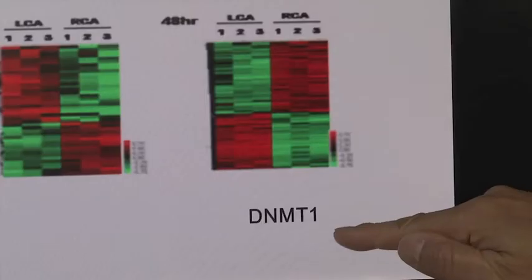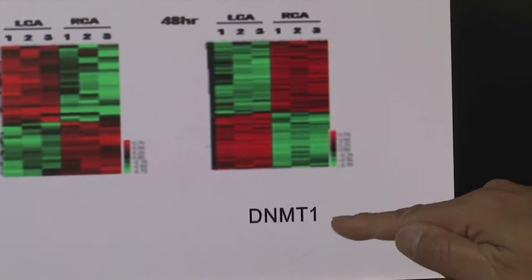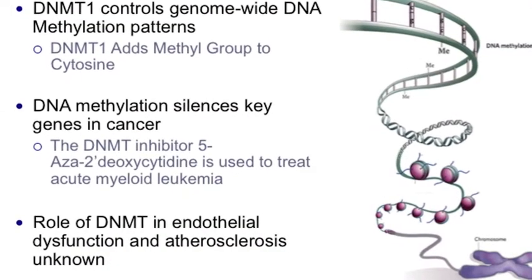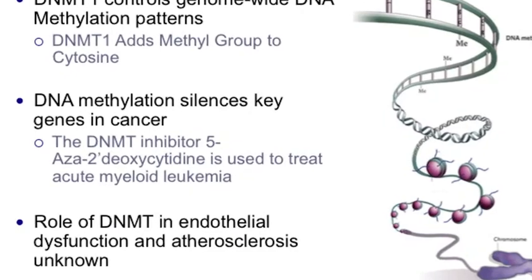With this model, we developed an additional novel technique that allowed us to collect endothelial-enriched genes directly from our animal models. Of the hundreds of genes identified, we noticed DNMT1 — DNA methyltransferase 1 — an epigenetic master regulator. DNA methylation on promoter regions silences key genes. However, the role of DNMT in endothelial dysfunction and atherosclerosis was unknown.